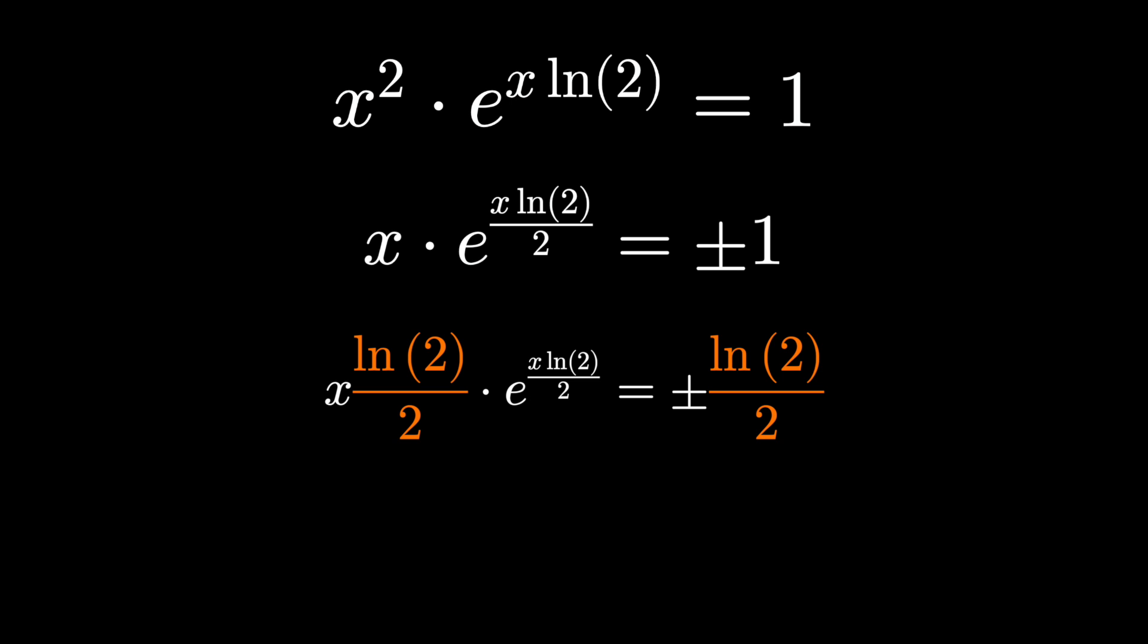Now, the left-hand side of our equation is in the form we're looking for, x e to the x. It's just not x, it's x ln 2 over 2, e to the x ln 2 over 2. Why is this nice? Because now we can apply W to both sides.